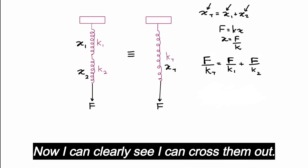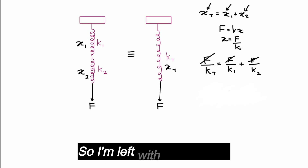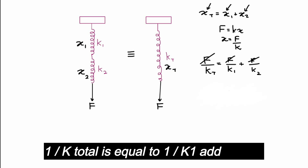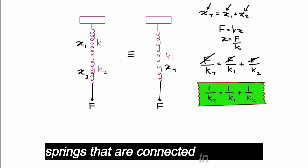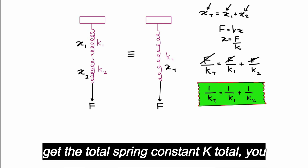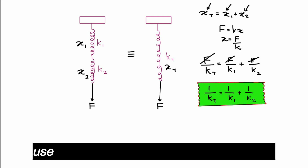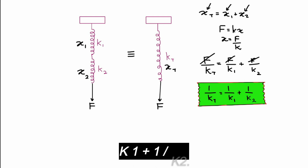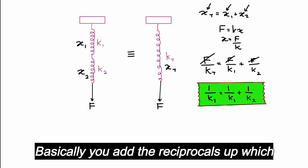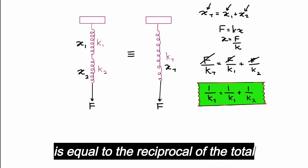Dividing through by F, we get the formula: one over k-total equals one over k1 plus one over k2. So when you have springs connected in series, to get the total spring constant you add the reciprocals, which equals the reciprocal of the total spring constant kt.